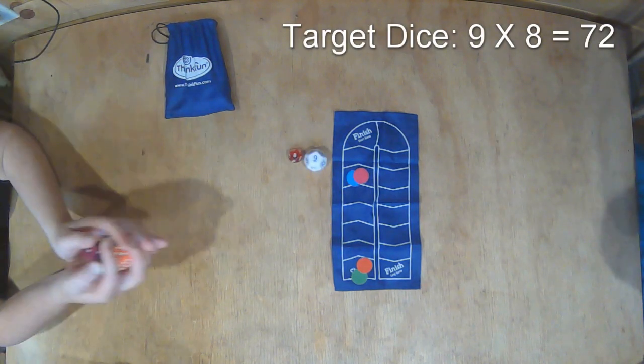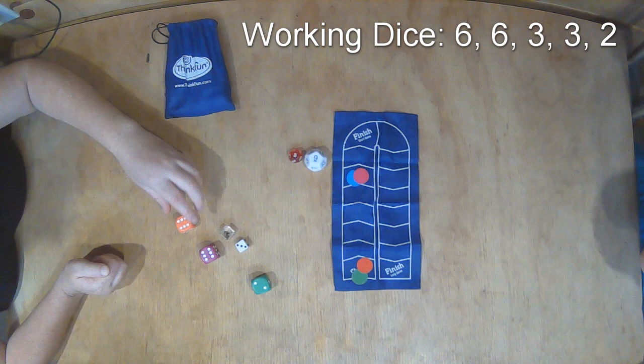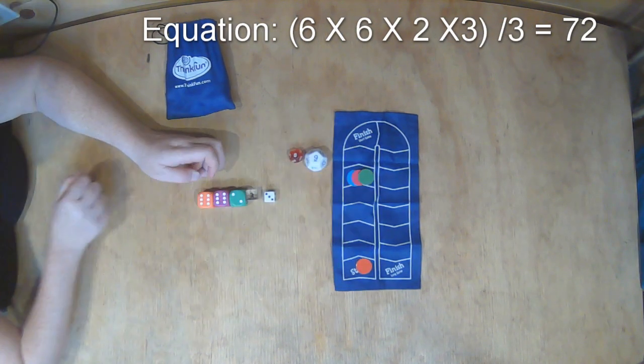Mom rolls in with a 72. And 6 times 6 times 2 times 3 all divided by 3 gets 72.